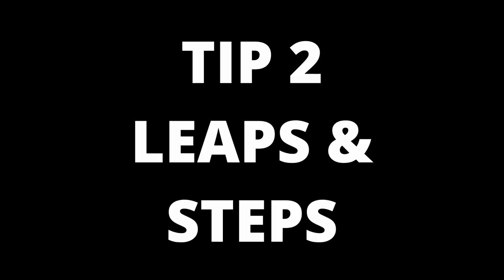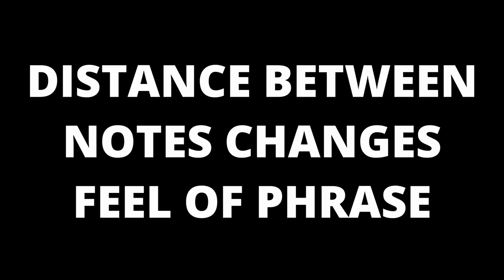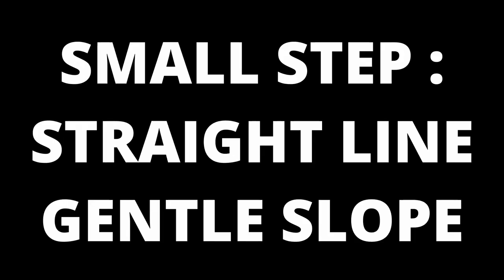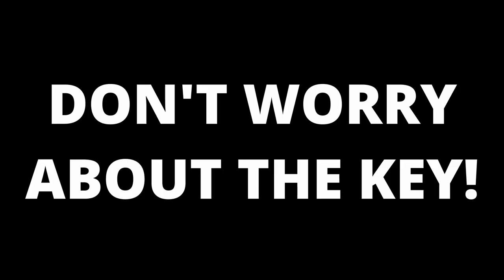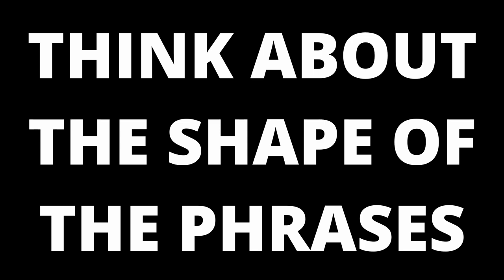Tip number two: after leaps, use small steps — and after small steps, have leaps. The distance between each note in your melody will change how it feels. Thinking about this in lines or shapes, a small step would be a straight line or gentle slope, and a leap would be the opposite, like a steep hill or cliff. We'll use the C major scale to craft our phrases, but the scale itself isn't important here — concentrate on the shape and direction of the phrases.